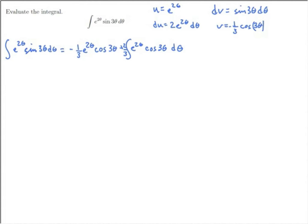Look at this integral we have left. It's not simplified, but it's certainly not any harder either — it's almost identical, except the sine has been replaced with cosine. So we're going to use integration by parts again, where we make the substitution u equals e to the 2 theta again, and dv is cosine of 3 theta d theta. In this case, du is 2 e to the 2 theta d theta, and v is 1 third sine of 3 theta — check the derivative of v and you'll see.